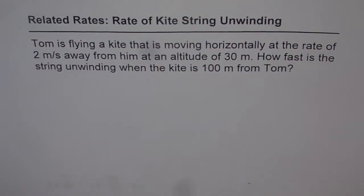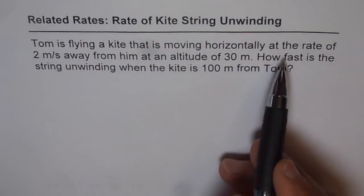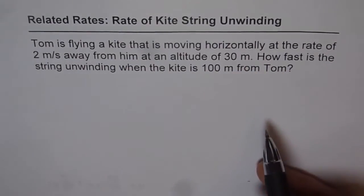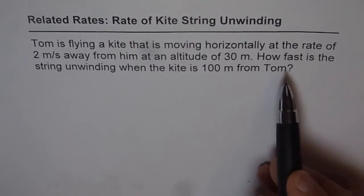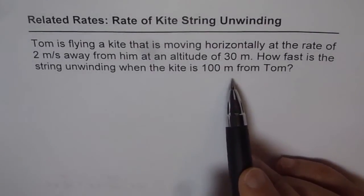Related rates: Rate of kite string unwinding. Tom is flying a kite that is moving horizontally at the rate of 2 meters per second away from him at an altitude of 30 meters. How fast is the string unwinding when the kite is 100 meters from Tom?